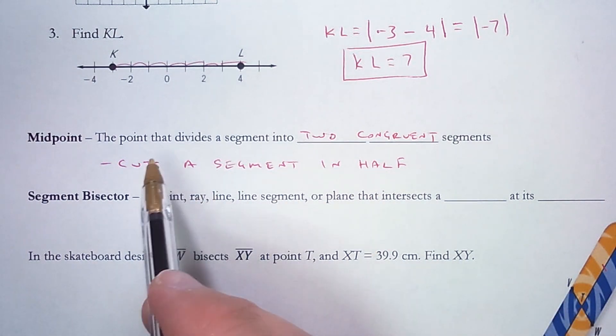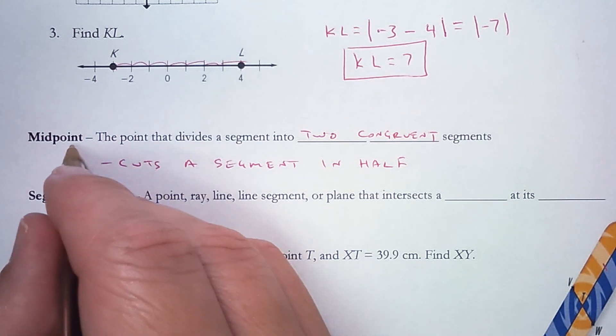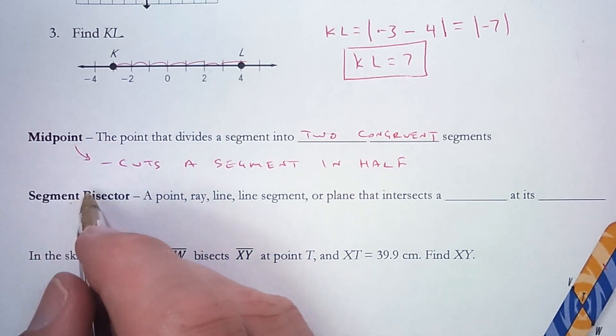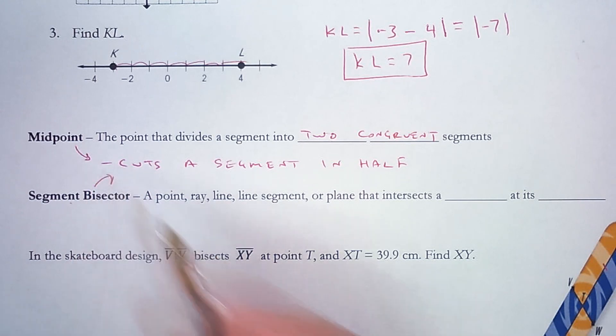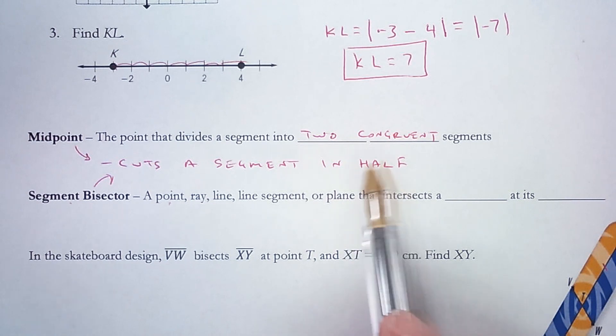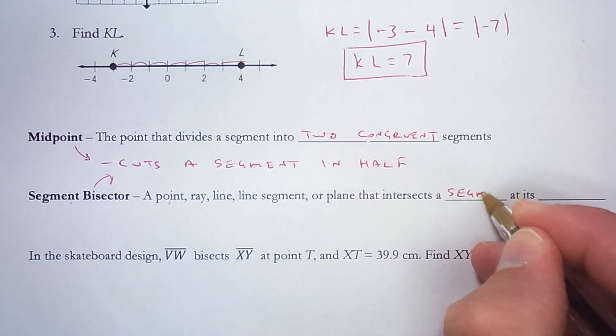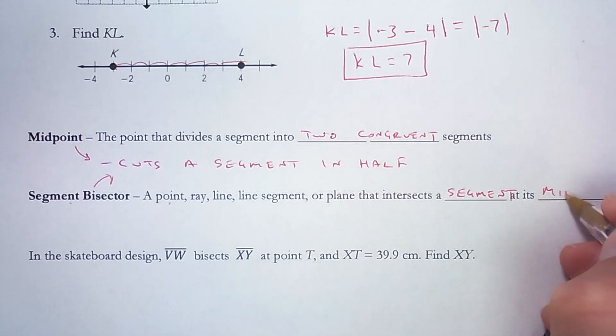Which really means a midpoint is actually a type of a segment bisector. A midpoint cuts a segment in half. So does anything else that's a segment bisector. A segment bisector could be a point, which would be the midpoint. It could be a ray, line, line segment, or a plane. Anything that cuts a segment in half, which really means that it intersects the segment at its midpoint.